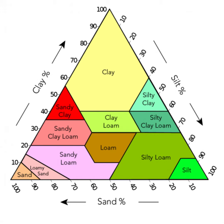The soil texture triangle is a graphical representation of the proportions of sand, silt, and clay in a soil. It is a valuable tool in soil science for classifying and identifying different soil types based on their particle size distribution. The triangle is used to determine the soil texture based on the percentages of sand, silt, and clay in a soil sample.